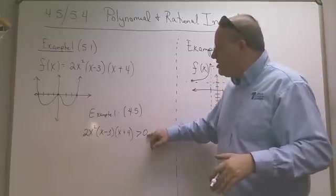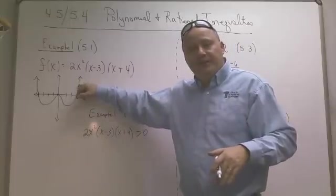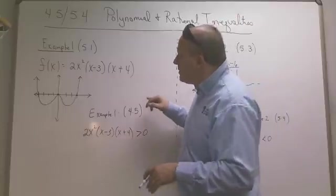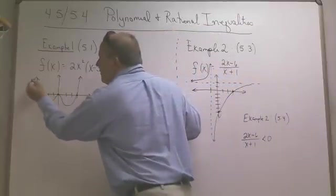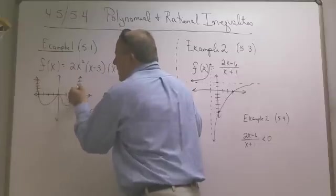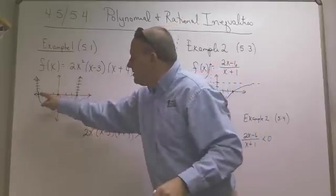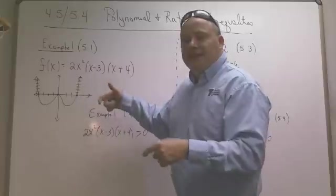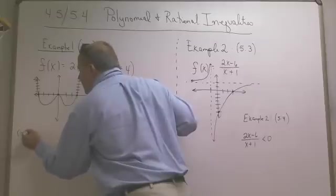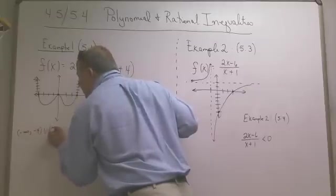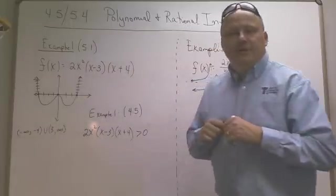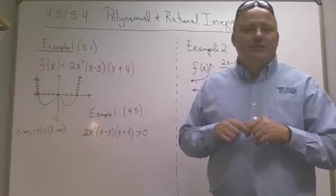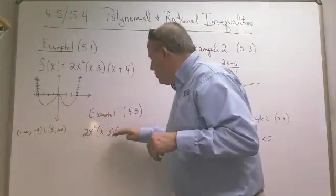If you're asked this question and you have a graph staring you in the face, it's easy to answer the question. When is this function greater than 0? It's above 0 in this part and above 0 in this part. Everywhere else, it's below 0. So to answer this question based on the graph, it's negative infinity to negative 4, union 3 to infinity. Because on the right side of 3, it's above the axis, and on the left side of negative 4, it's above the axis.